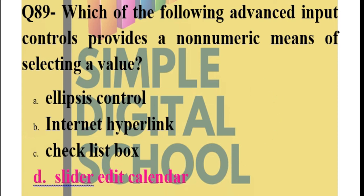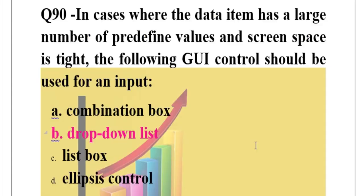Question number 90: In cases where the data item has a large number of predefined values and screen space is tight, the following GUI control should be used for an input. Combination box, drop-down list, list box, or ellipsis control. Here we are talking about a screen on which the space is less and we have already predefined a lot of data set, large number of values.